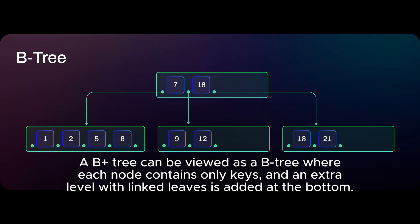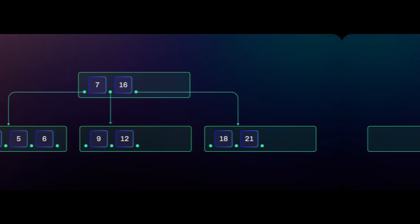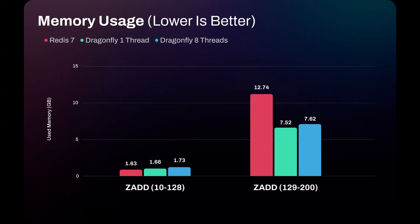In Dragonfly, we have switched to a more advanced B+ tree-based implementation for sorted sets. This reduces memory overhead and improves performance. Based on our benchmarks, when using 800,000 sorted sets each storing more than 128 elements, we observed Dragonfly having four to five times more throughput than Redis. Memory-wise, we also observed up to a 40% reduction when using Dragonfly.